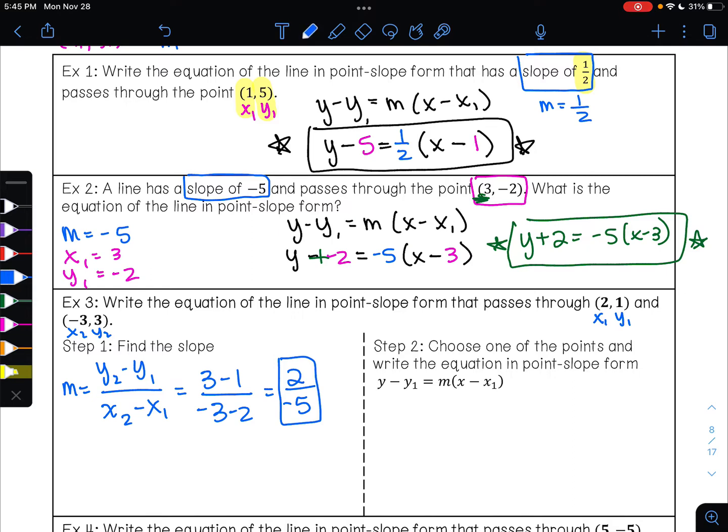So my equation, I'm going to pick this point right here. You could pick either point. If I pick the point (2,1), then my slope m is negative 2/5, x₁ is 2, and y₁ is 1. So when I write my equation, I'll have y minus 1 equals negative 2/5 times x minus 2. This is my equation of the line.